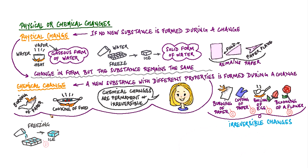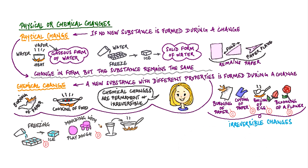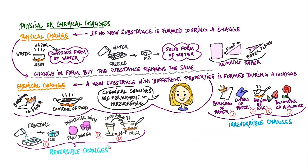Water freezing into ice is a physical change where no new substance is formed. The liquid form of water is frozen into the solid form called ice. It is reversible — we can freeze water into ice, and the ice can be melted back into water. Molding with playdoh is again a physical change as no new substance is formed. The ball of playdoh can be molded into different objects, and it is reversible — the molded objects can be made back into the playdoh ball. Cold milk to hot milk is also a physical change, where milk changes from its cooler form to its warmer form with no change of substance. It is also reversible — we can heat milk to make it warm and cool it to make it cold.